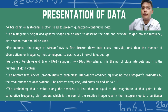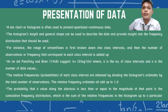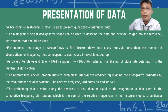A bar chart or histogram is often used to present quantized continuous data. The histogram's height and general shape can describe the data and provide insight into the frequency distribution. The range of streamflow is broken into class intervals, and the number of observations corresponding to each class interval is counted. As suggested by Panofsky and Bryer (1968), k equals 5 times log base 10 of n, where k is the number of class intervals and n is the number of data values.